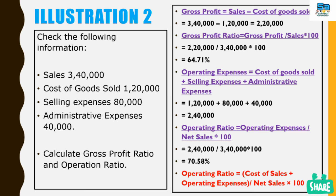Operating expense equals cost of goods sold plus selling expense plus administrative expense: 1,20,000 plus 80,000 plus 40,000, giving a total of 2,40,000 as the operating expense.